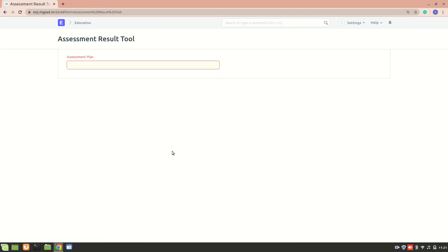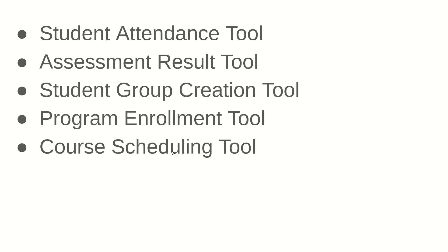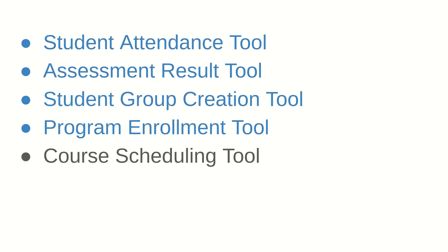We have several tools available. First, we have the attendance tool to mark all attendance collectively. Then we have the assessment result tool. Next is the student group creation tool, which lets you add all students into a group at once. Then there's the program enrollment tool, and finally the course scheduling tool — which is like a calendar where you select a date. The four most important are: student attendance, assessment result, student group creation, and program enrollment.